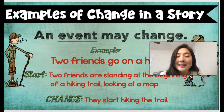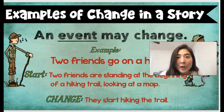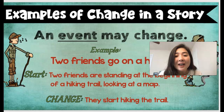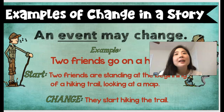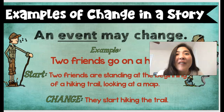The first example of a change in a story is that an event may change. For example, two friends go on a hike. At the beginning, they're standing at the beginning of a hiking trail looking at a map. Then a change happened — they start hiking the trail. As you can see, an event, or something that happened, changed.